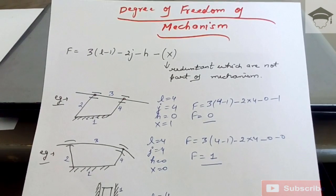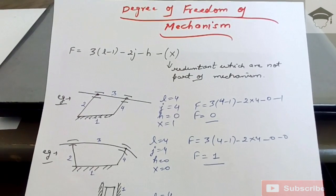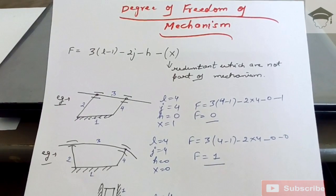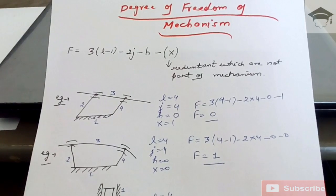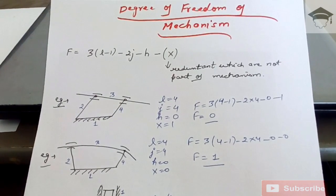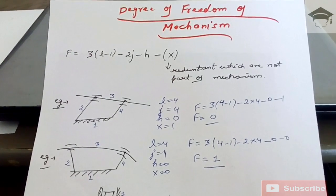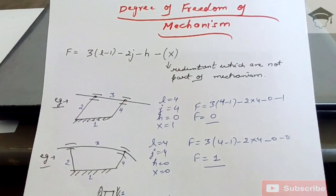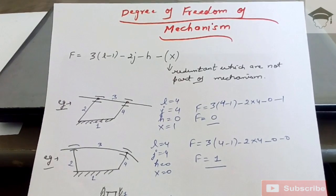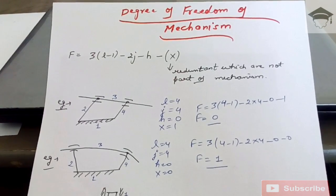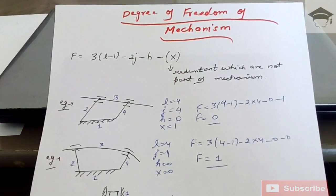Normally x is 0, but in typical questions there is some value of x which we have to determine by logic by examining the mechanism. x is the redundant which is not part of the mechanism but still exists, and we have to subtract it from the degree of freedom. Here l is the number of links, j is the number of joints, and h is the number of higher pairs.